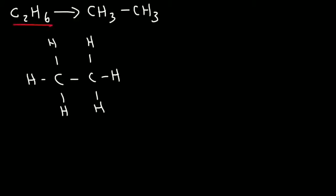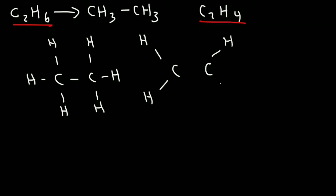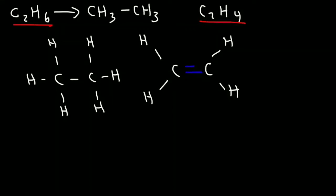Now what about C2H4? How would you draw the Lewis structure for that? Each carbon atom is going to have two hydrogen atoms instead of three, because there's a total of four and you want them distributed equally. Carbon likes to form four bonds, so the only way this is going to work is if we put a double bond between the two carbon atoms. And so this is known as an alkene. Alkenes contain at least one double bond. Alkenes do not contain double bonds.